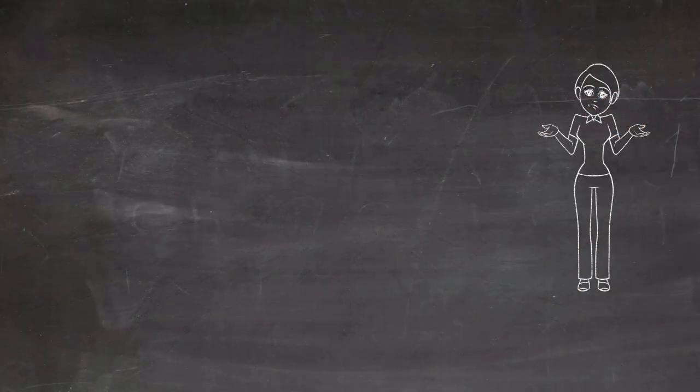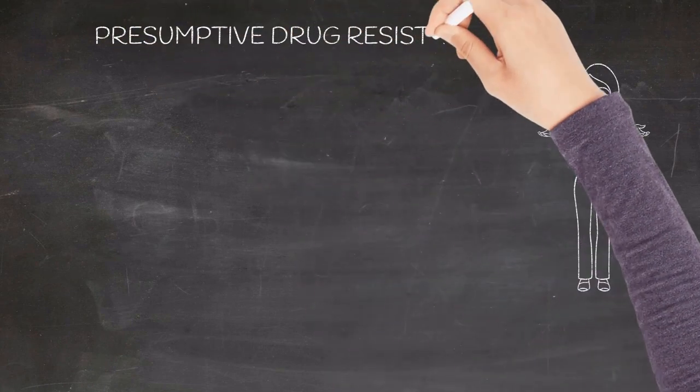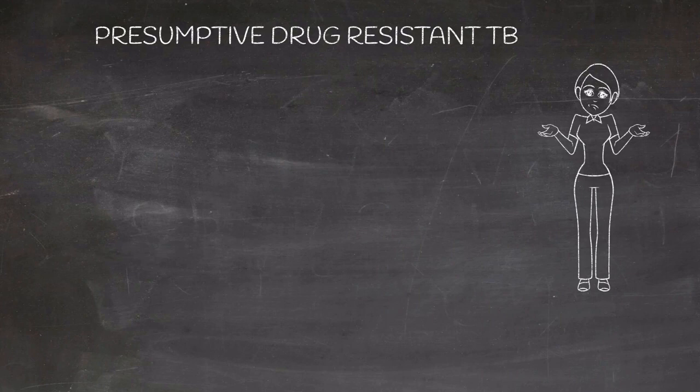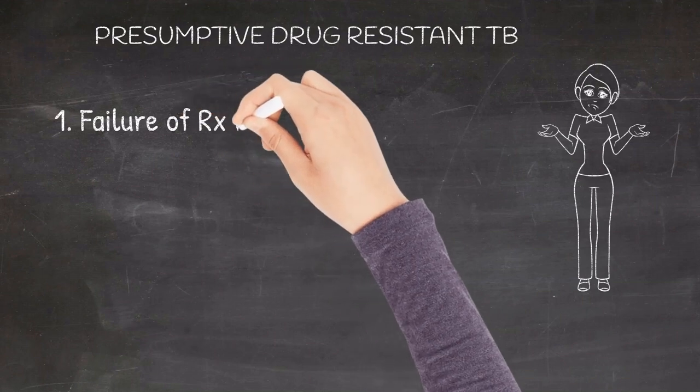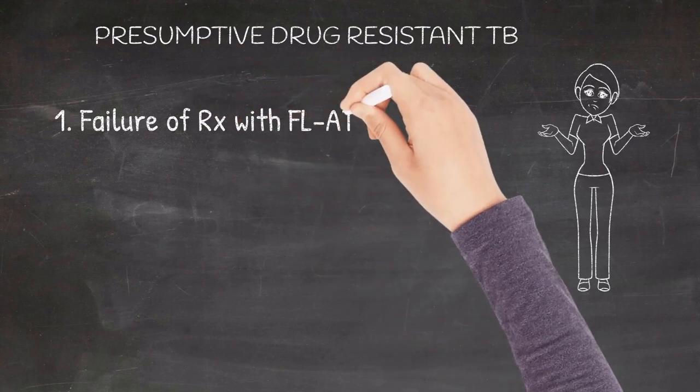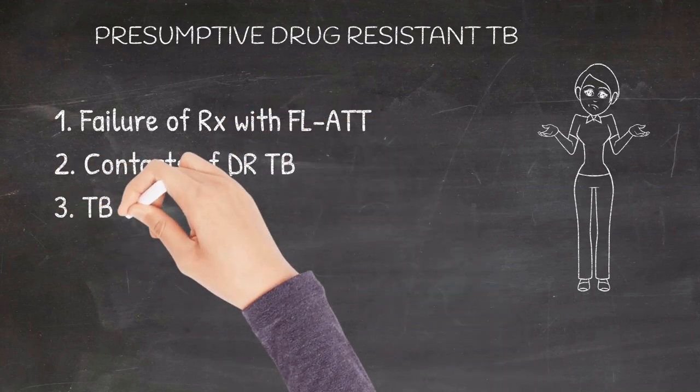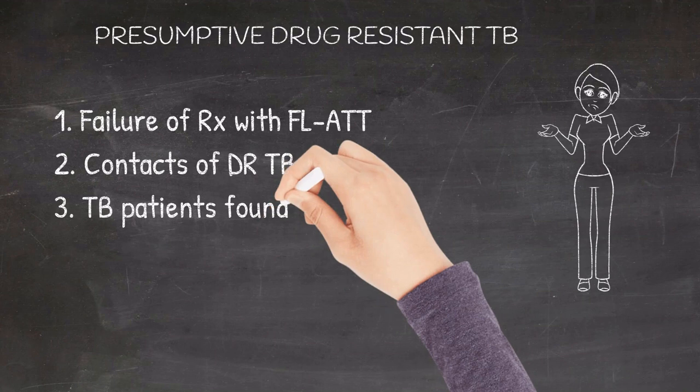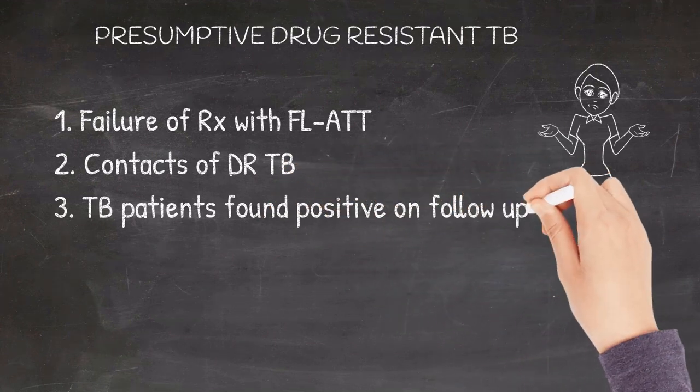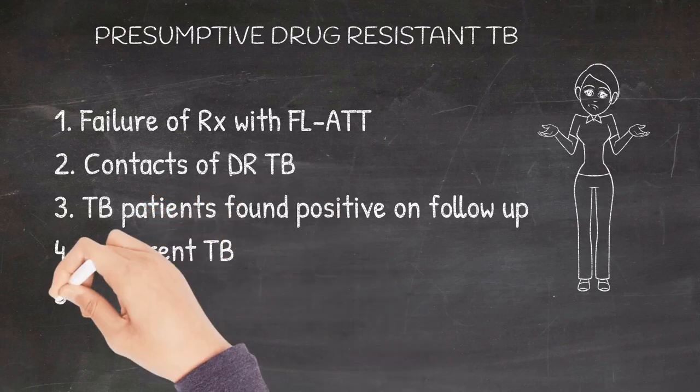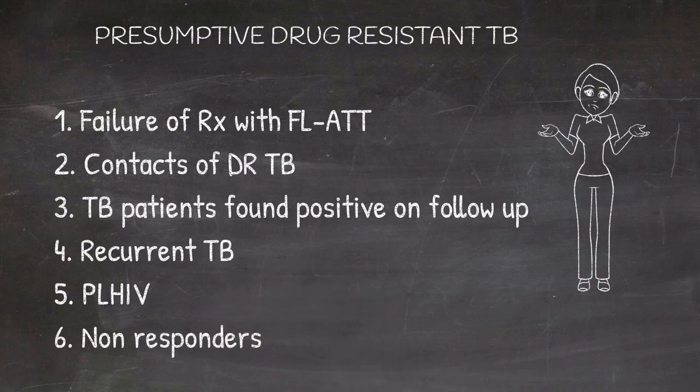How do you suspect a drug-resistant tuberculosis? They are classified as presumptive drug resistant tuberculosis: In patients where there is failure of treatment with the first-line anti-TB drugs, patients who are contacts of drug resistant TB patients, TB patients who are found positive on follow-up, recurrence of tuberculosis, people living with history of HIV, and non-responders to first-line anti-TB drugs including the pediatric population.